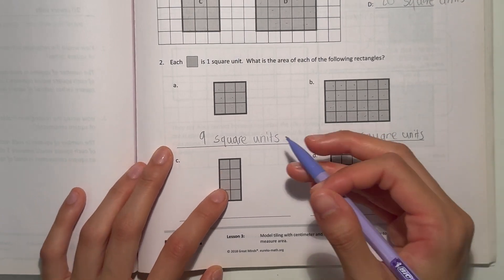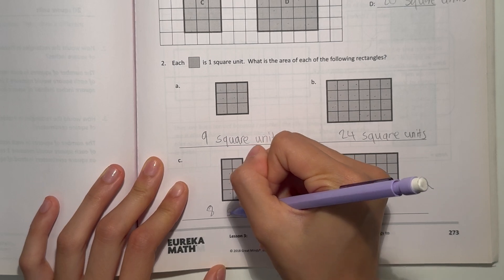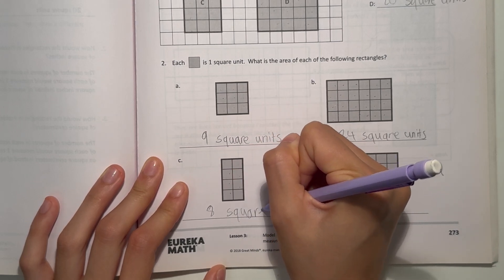Alright, and C, there's 1, 2, 3, 4, 5, 6, 7, 8. So the area is 8 square units.